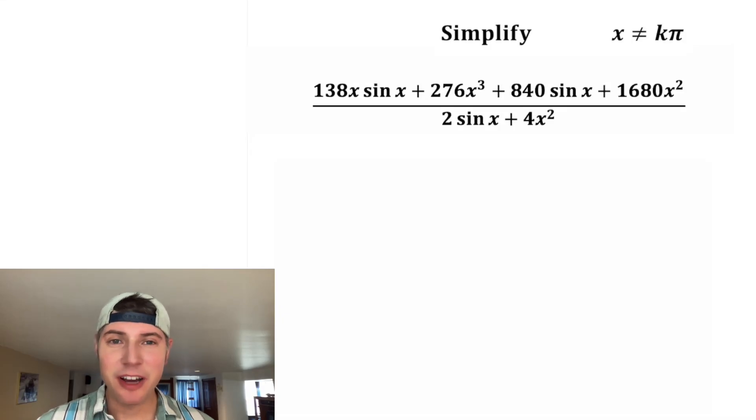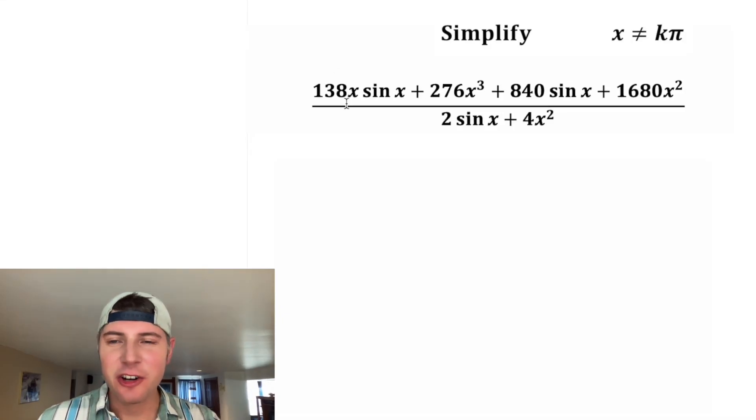Hey guys, this looks like a fun one. It says simplify this rational expression. It's 138x sine x plus 276x cubed plus 840 sine x plus 1680x squared divided by 2 sine x plus 4x squared. So how would you simplify this?